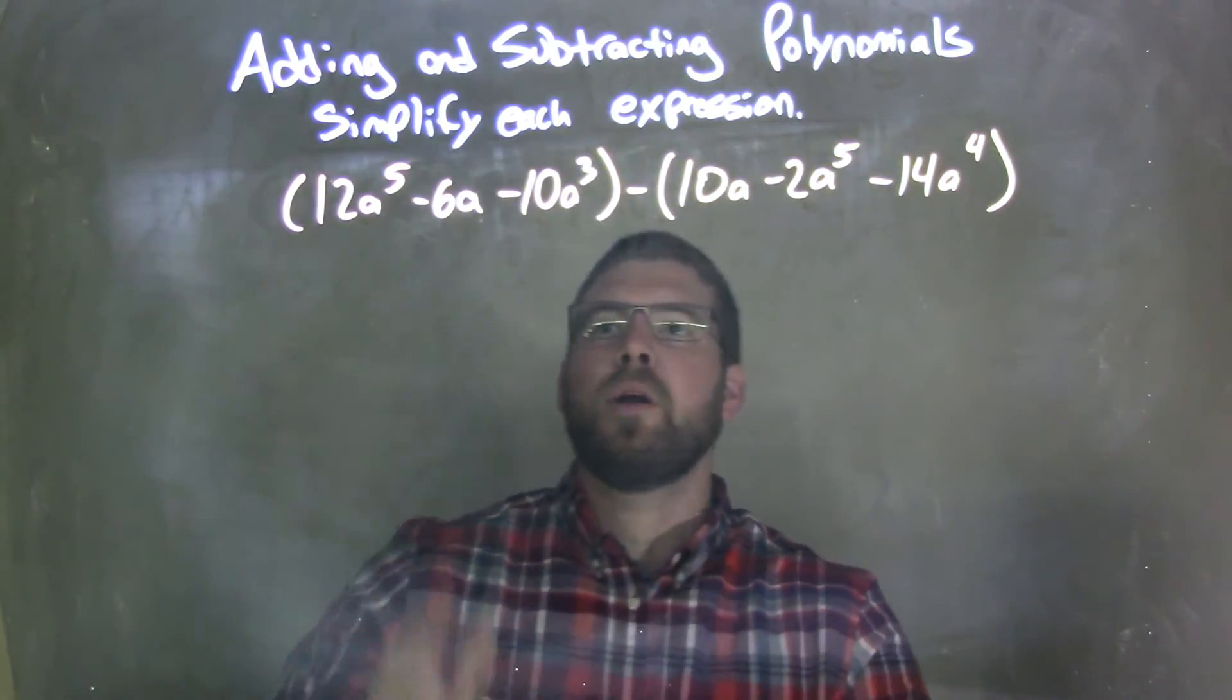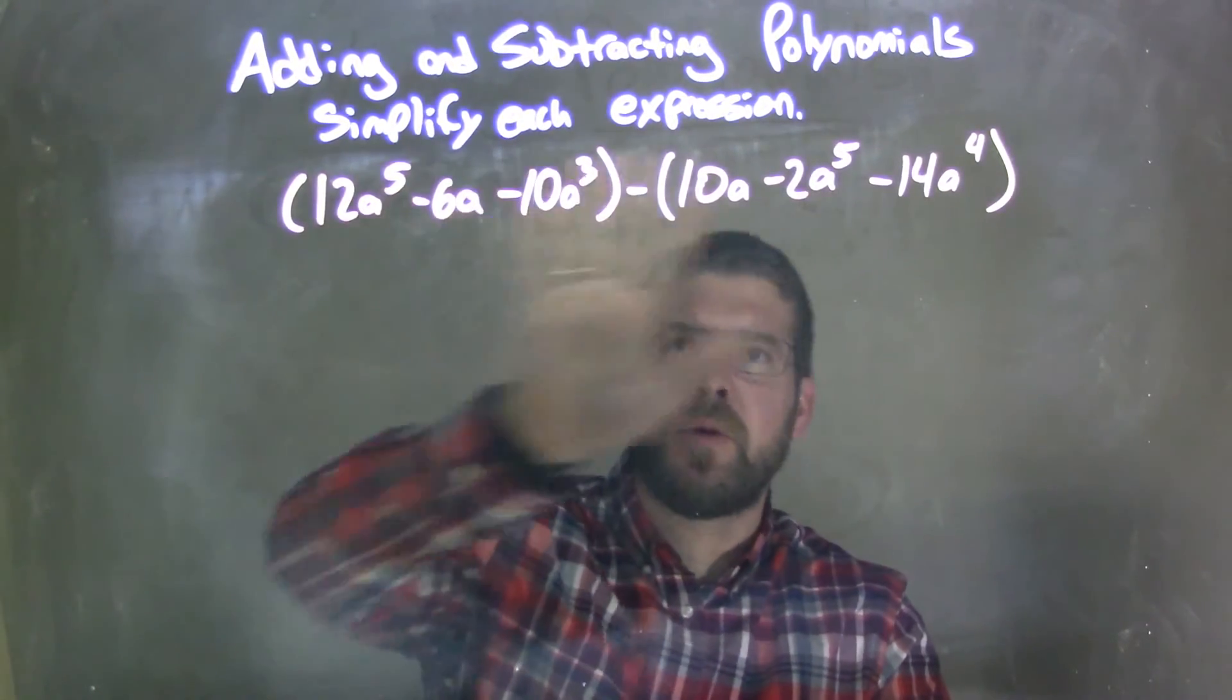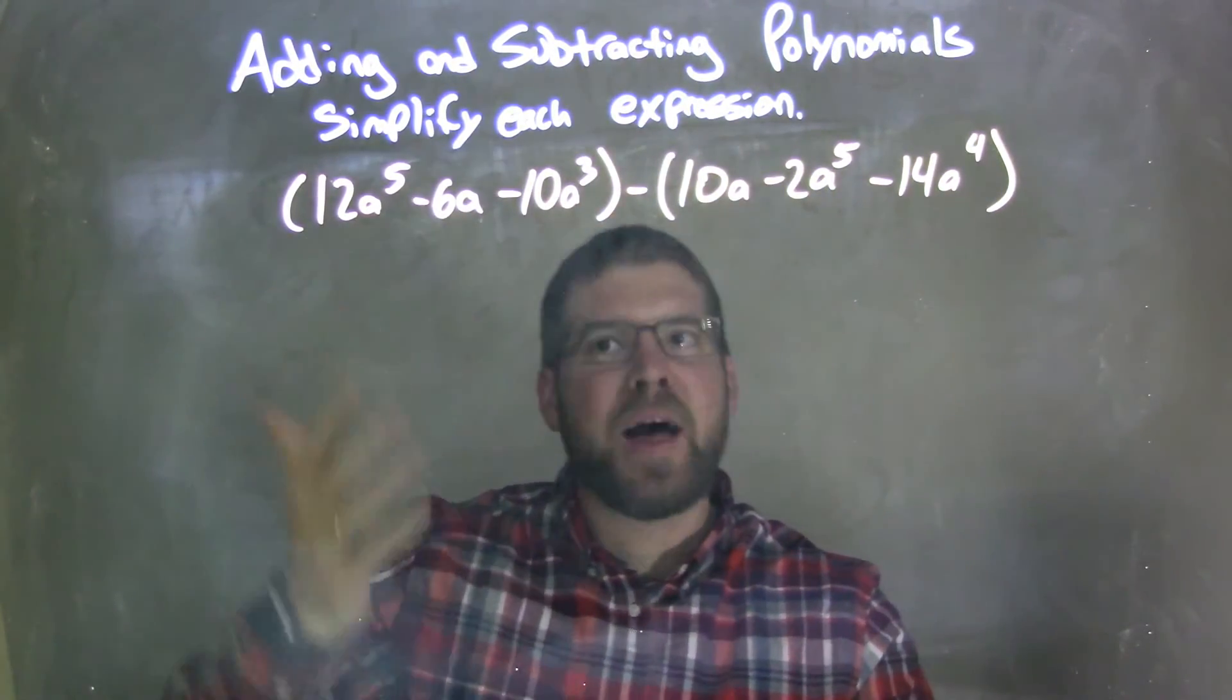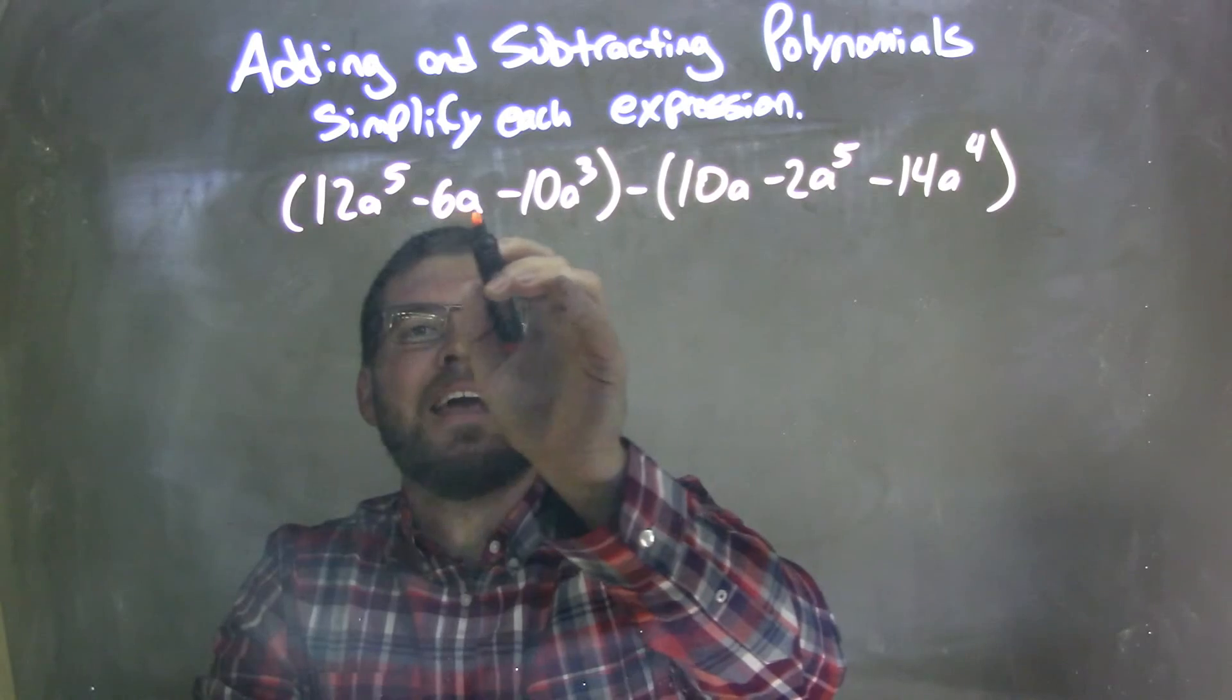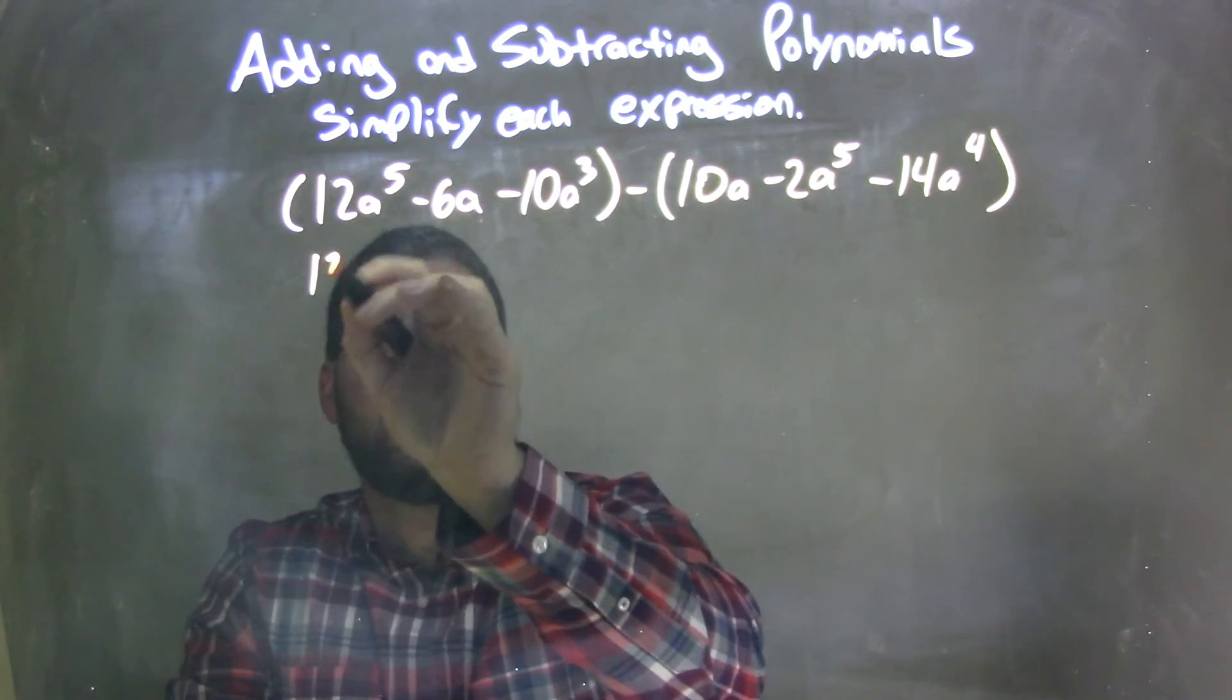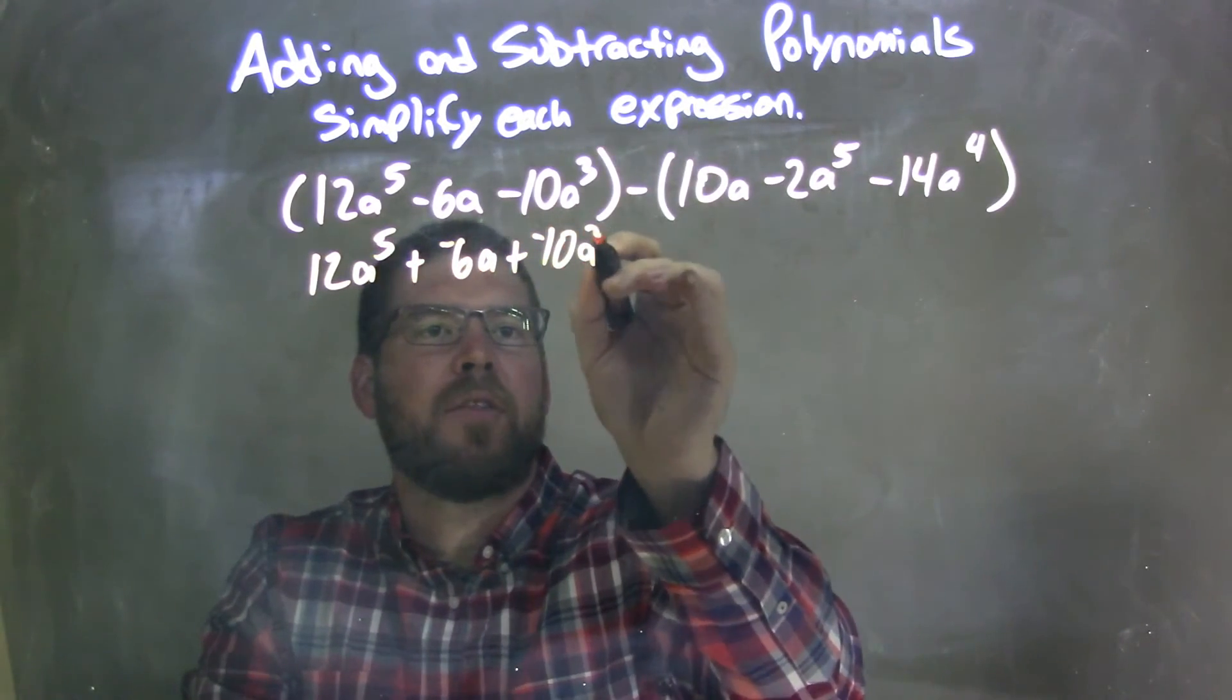Well, so what I want to do now is I'm going to simplify this. First, we're looking at each parentheses, and we see that we can't simplify there, so what I'm going to do is take all these subtraction signs and add a negative. So I have 12a to the 5th plus a negative 6a plus a negative 10a to the 3rd.